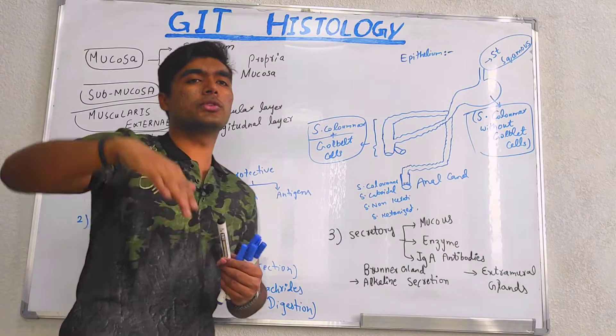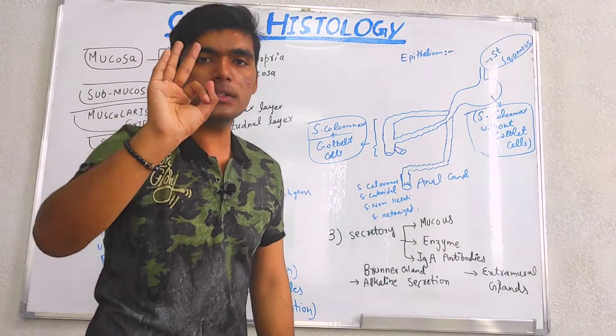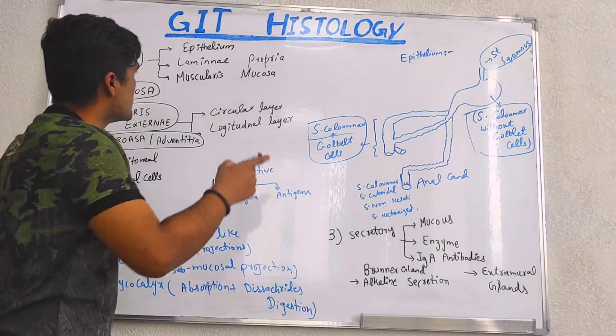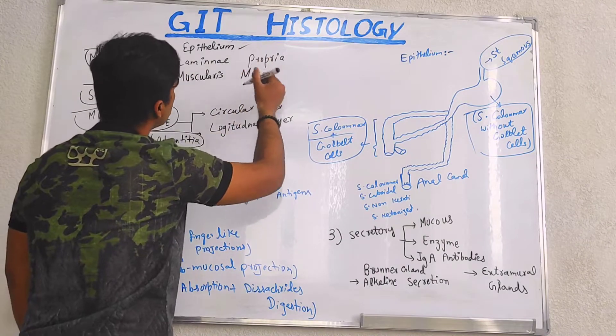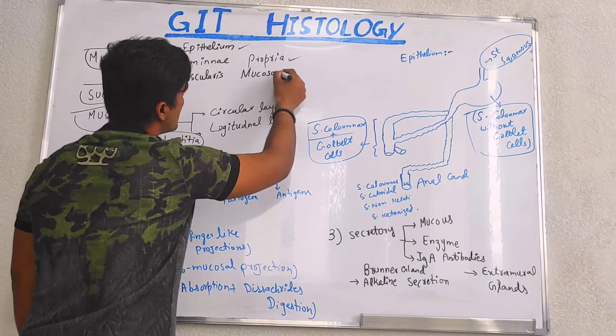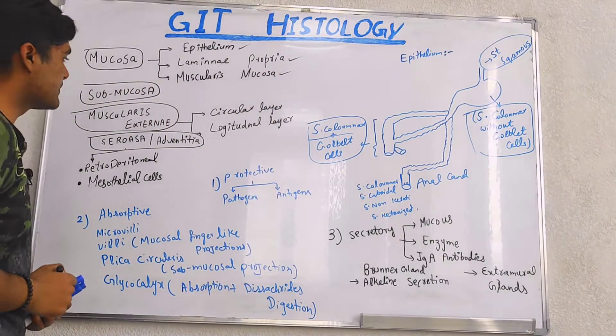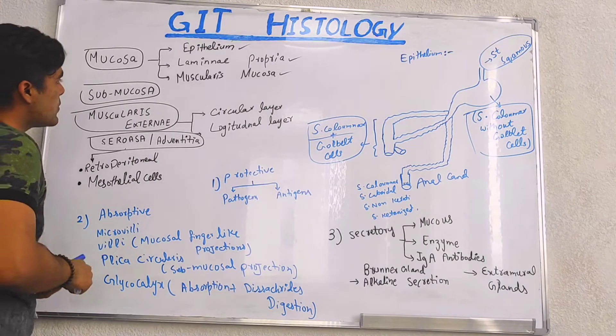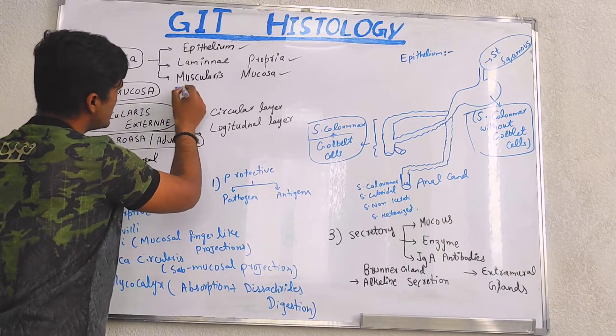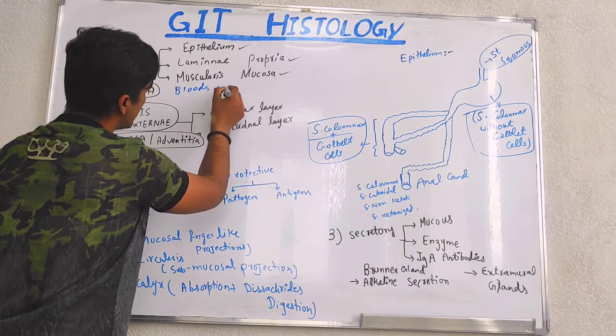Mucosa is the outermost layer. It contains further three major layers which are epithelium, lamina propria, and muscularis mucosa. In the same way, submucosa contains blood vessels, lymphatics, and nerves.